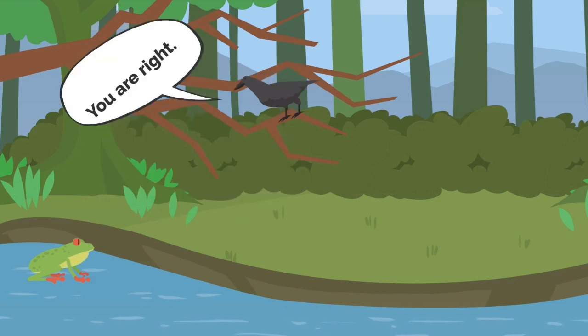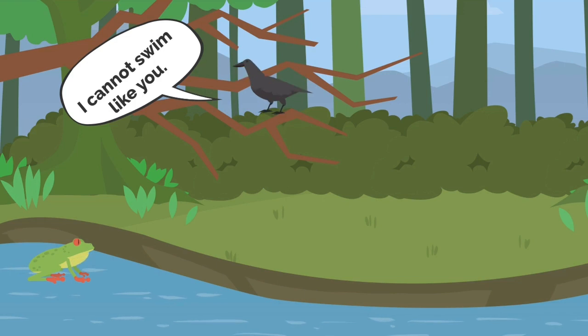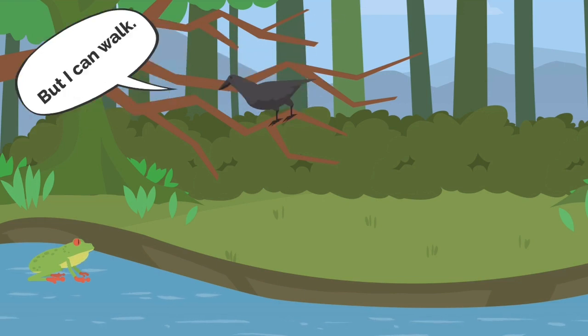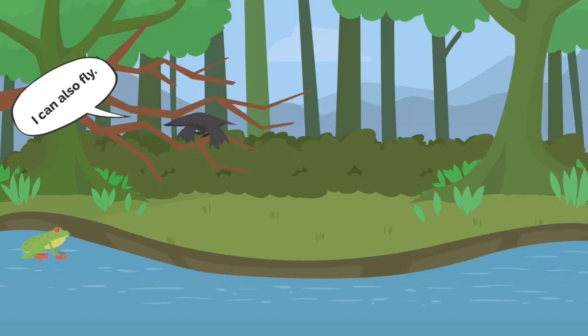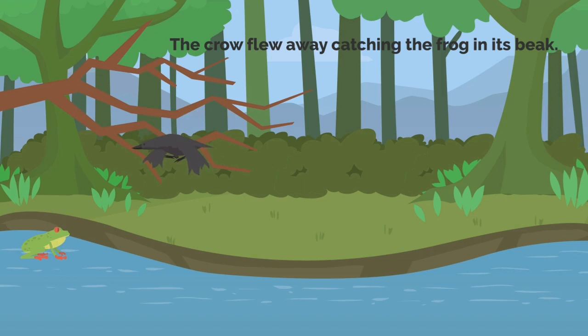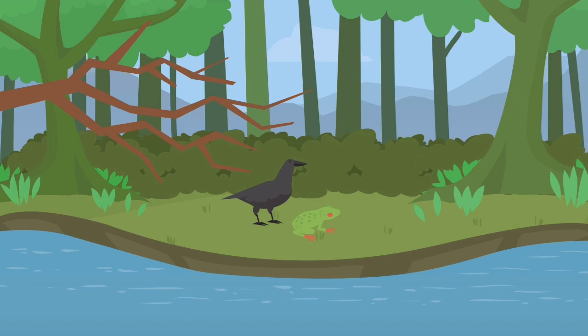'You are right. I cannot jump like you, I cannot swim like you, but I can walk and I can also fly.' Saying so, the crow flew away, catching the frog in its beak.